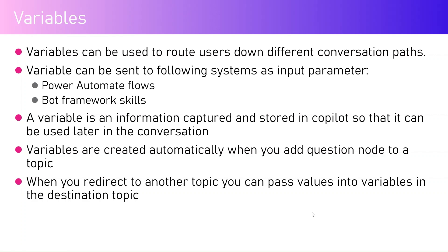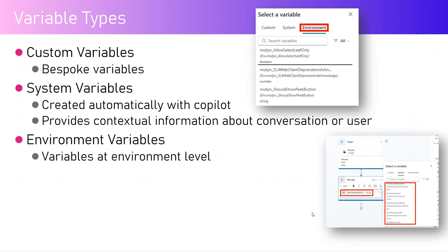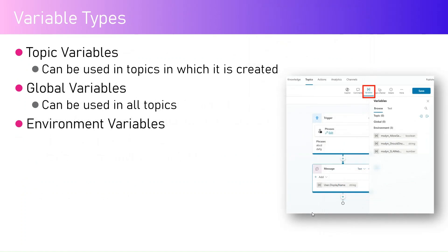Variables are created automatically when you add a question node to a topic. When you redirect to another topic you can pass values into variables in the destination topic. There are three different variable types: custom variable, system variable, and environment variables. Environment variables exist at an environment level; custom variables you create on demand; system variables are automatically created when you provision a Copilot and provide contextual information about a user or conversation.